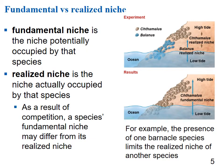An organism's fundamental niche may differ from its realized niche. The fundamental niche is the area they could potentially occupy; the realized niche is the area they're actually occupying. In this picture, the top shows two species and the bottom shows only one. The fundamental niche of the brown species includes the whole intertidal zone, but with both species present, the realized niche is much smaller — the presence of one barnacle species limits the realized niche of another.